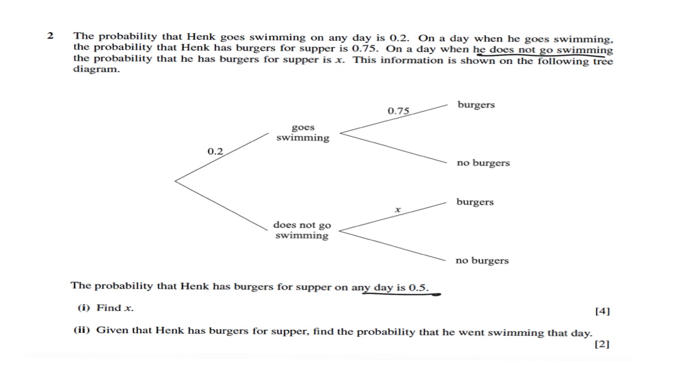Let's write down all the information that we have. 0.2, and that's the complement of 0.2 which is 0.8, and 0.75, so that should be 0.25. That's X and no burger, unknown. With this information at hand, let's find out what is X.